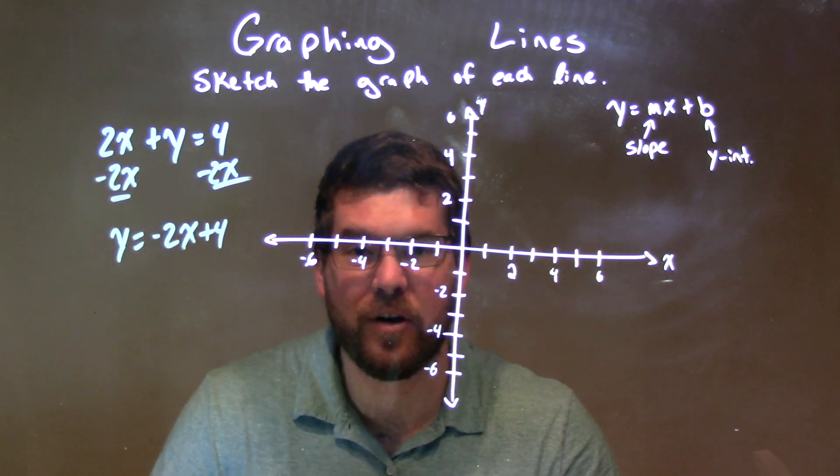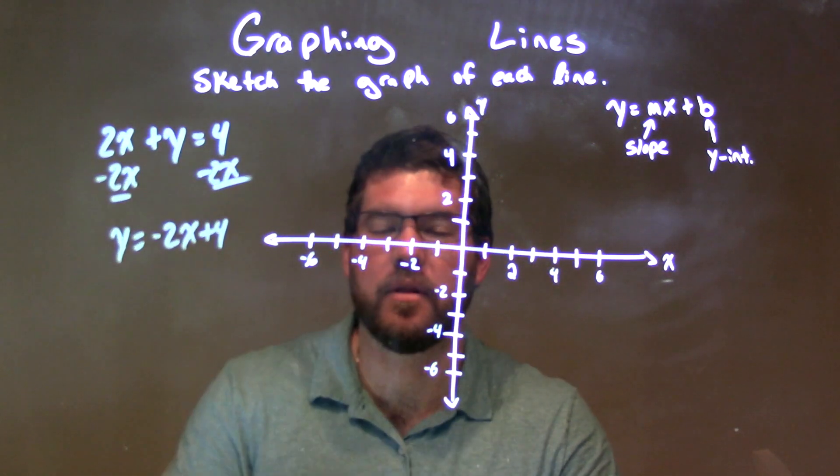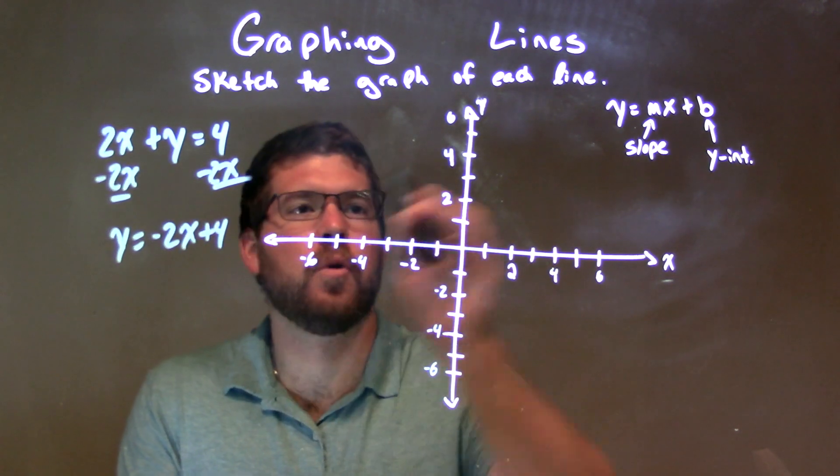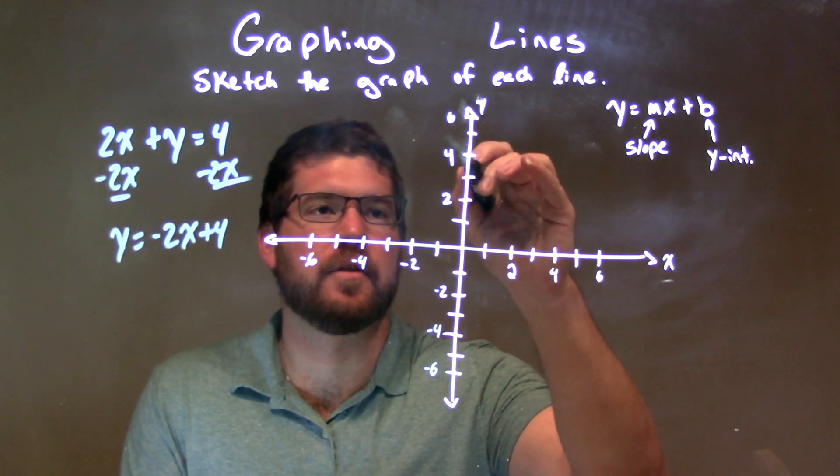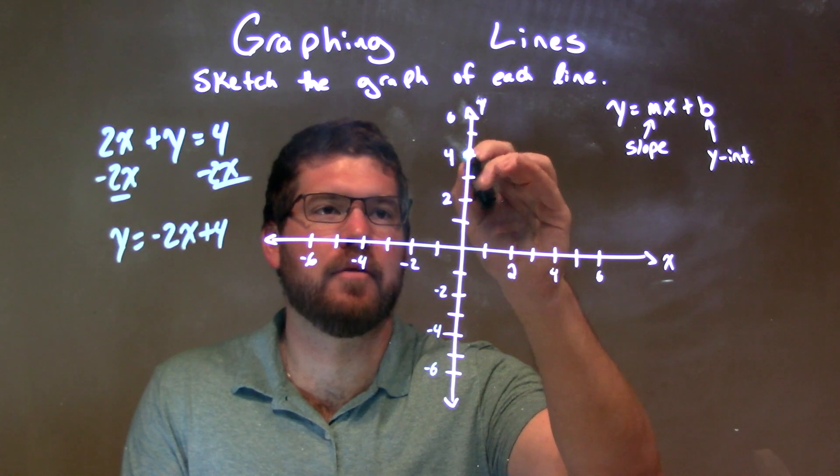And there we have our slope-intercept form, our equation of the line. So 4 is where we cross the y-axis, our y-intercept, so we'll put a dot right there at 4.